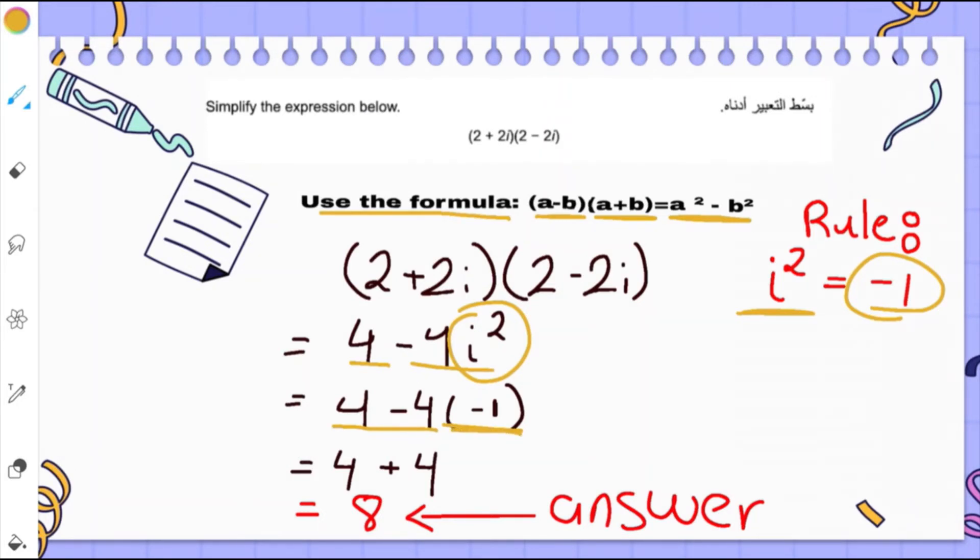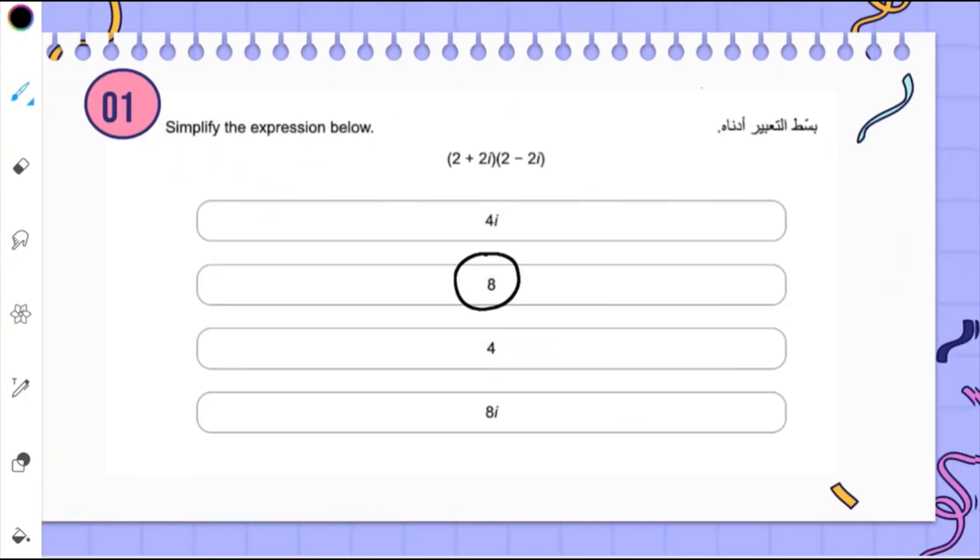And negative 4 times negative 1 is always equal to positive 4, because a negative and a negative is always positive. So it's going to be 4 plus 4 which equals 8. So 8 is the right answer.